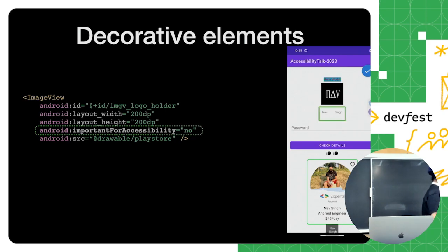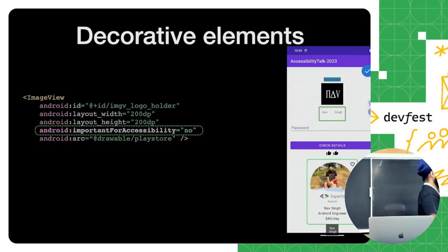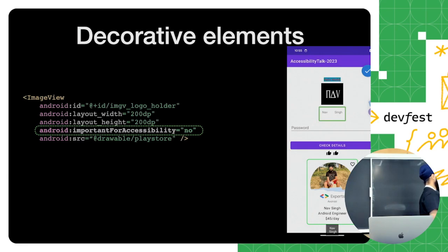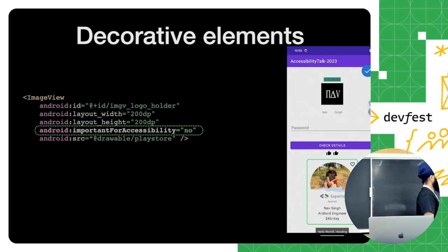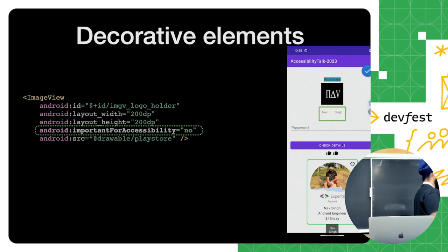This covers skipping components on screen. In this case I don't want TalkBack to process the image logo, so I'm setting the `importantForAccessibility` property to 'no.' There are a couple of options — you can set the content description to null and it will automatically skip. But this is a more readable form, informing the system as well as future developers that this component needs to be skipped by TalkBack.